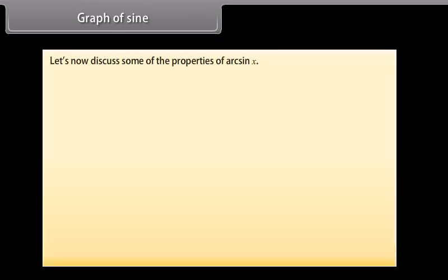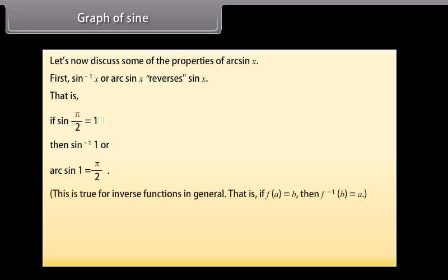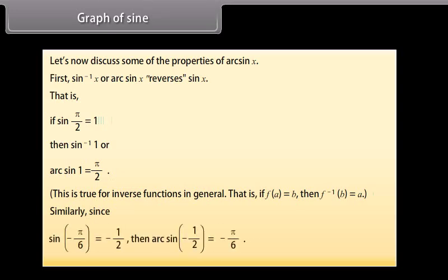Let's discuss some properties of arc sin x. First, sin⁻¹ x reverses sin x — that is, if sin(π/2) = 1, then sin⁻¹(1) = π/2. This is true for inverse functions in general: if f(a) = b, then f⁻¹(b) = a. Similarly, since sin(−π/6) = −1/2, then arc sin(−1/2) = −π/6.